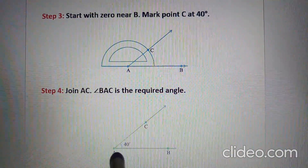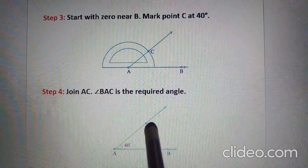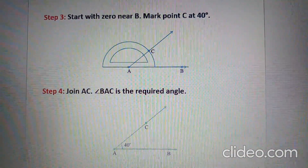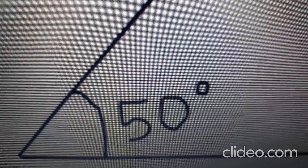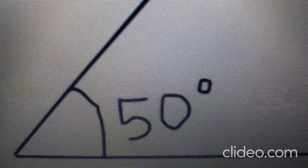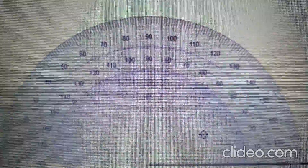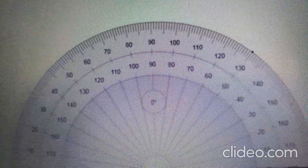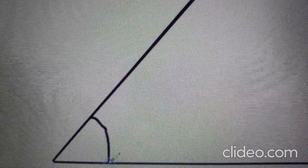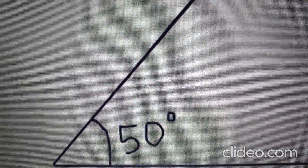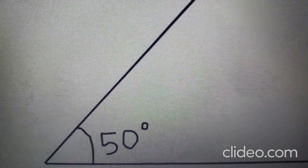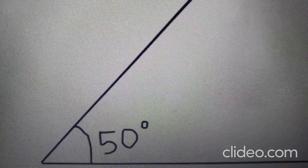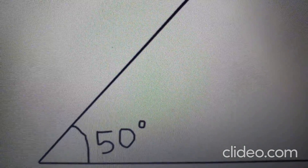Step 4: Join point A and C to get the required angle. Now let's construct an angle of 50 degrees. In the same way you can construct other angles using a protractor.